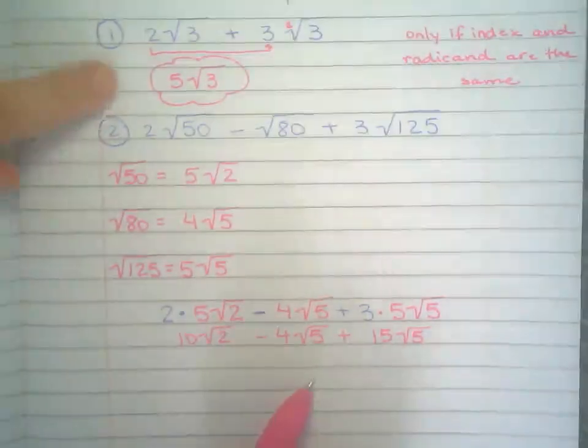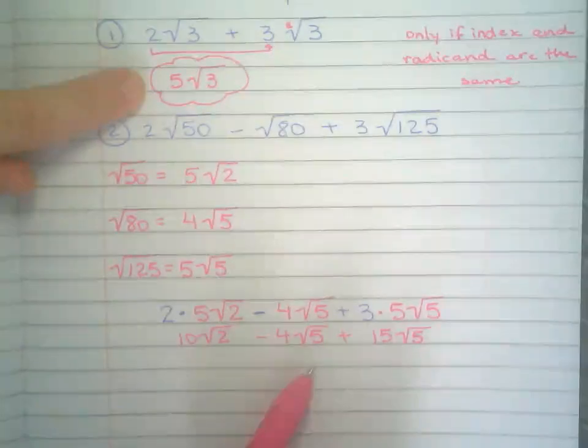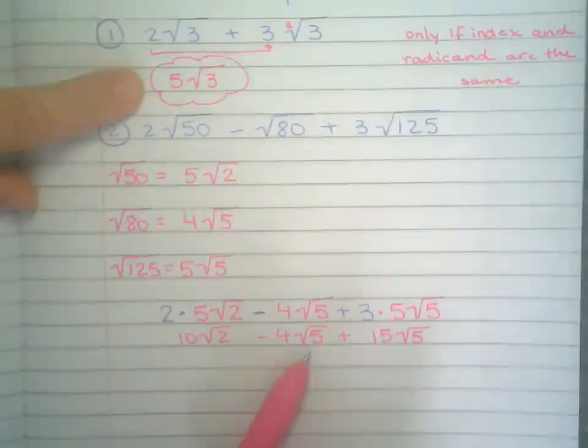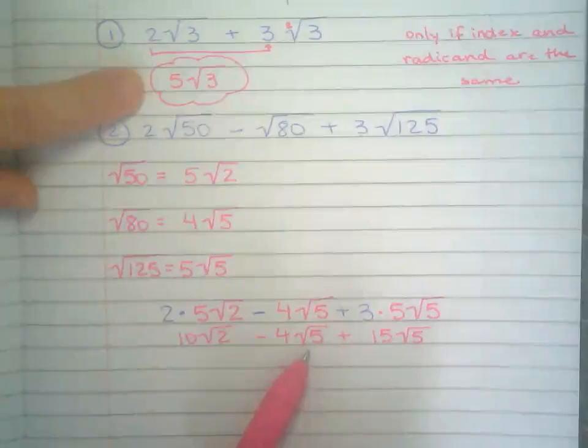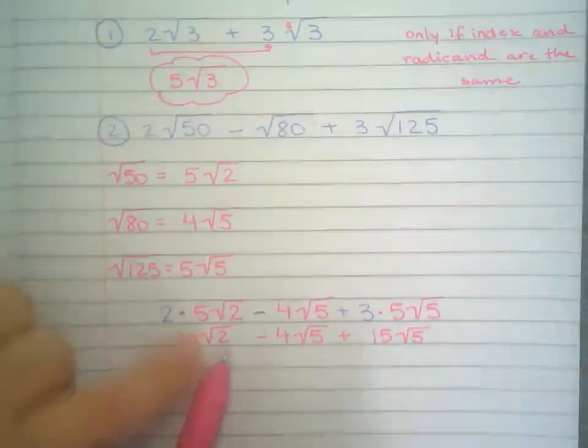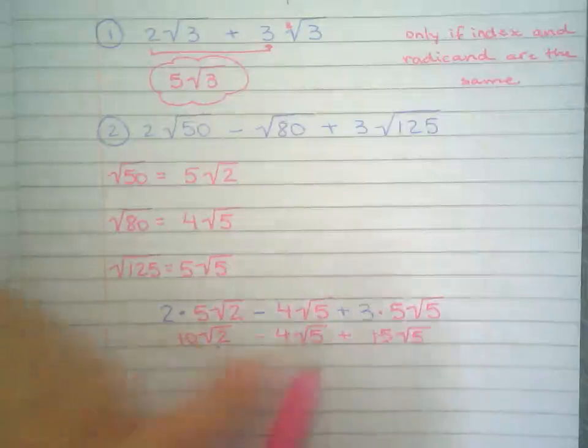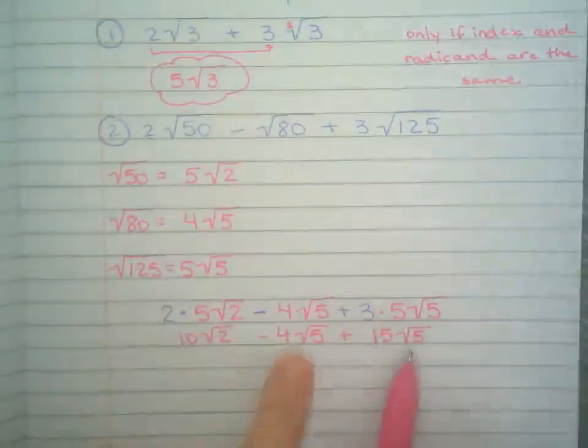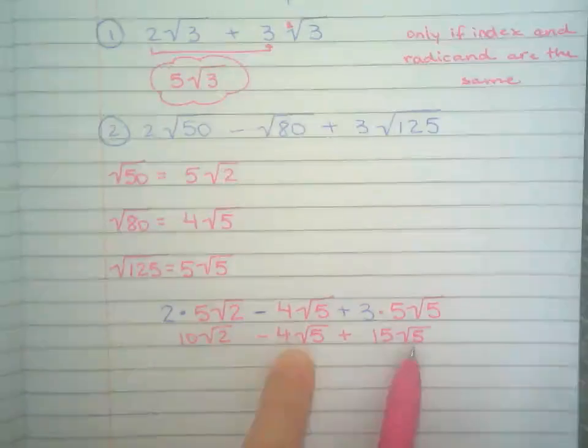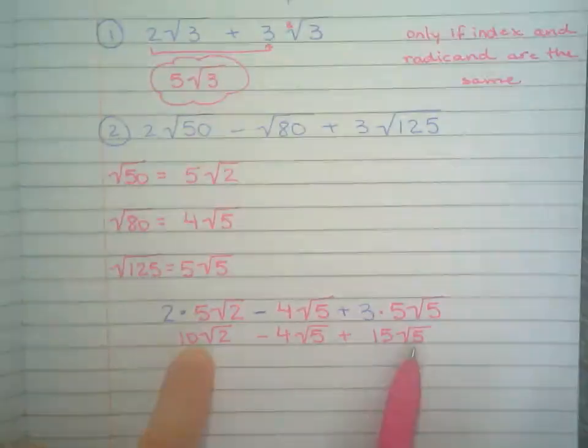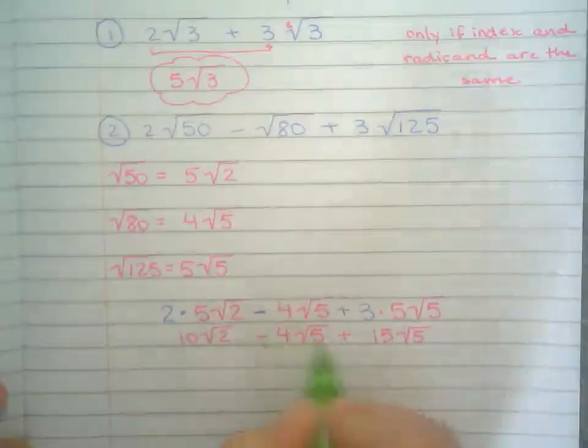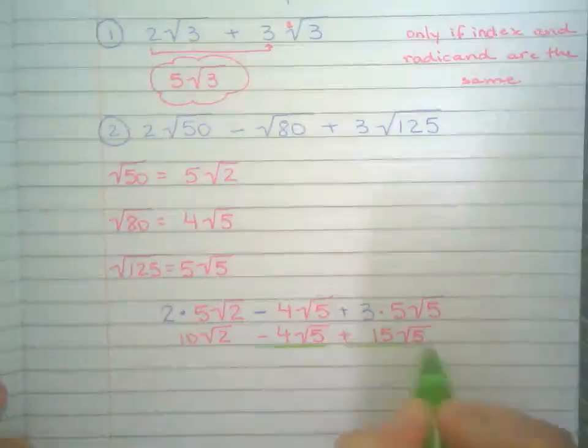Now we're back to number 1. I can only add or subtract if they have the same index and the same radicand. Like, I have square root of 2, square root of 5, square root of 5. I can definitely put these two together. There's nothing I can do about 10√2, so I'm going to go ahead and put these guys together.